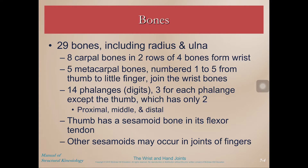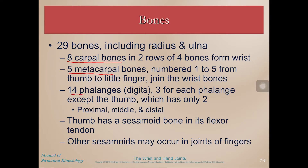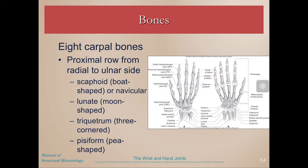Including the radius and ulna, there are 29 bones — 8 carpal bones, carpal meaning wrist, in 2 rows of 4. Five metacarpal bones, which are just distal to the carpal bones in the palm of your hand. And 14 phalanges, or digits — your fingers — 3 each for each finger except the thumb, which only has 2. We call these proximal, middle, and distal. The thumb has a sesamoid bone in its flexor tendon, and there can be other sesamoid bones occurring in joints of fingers randomly.